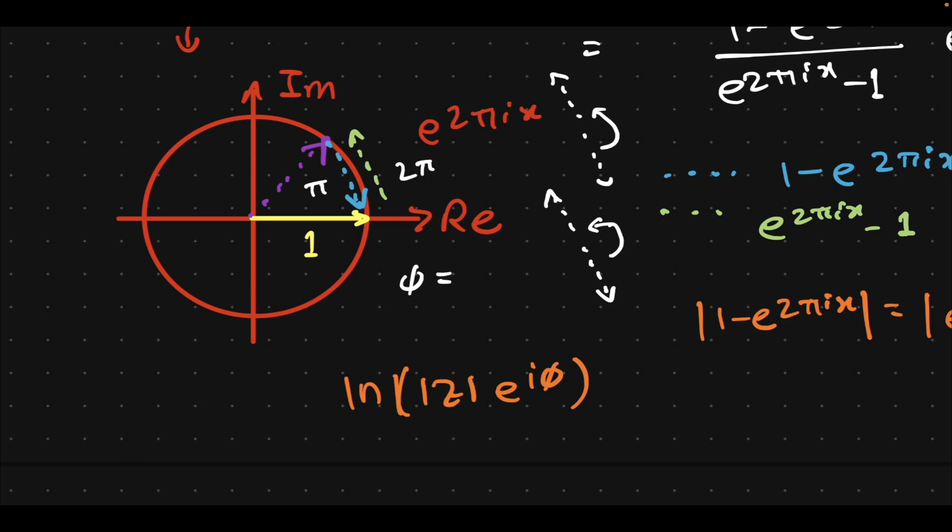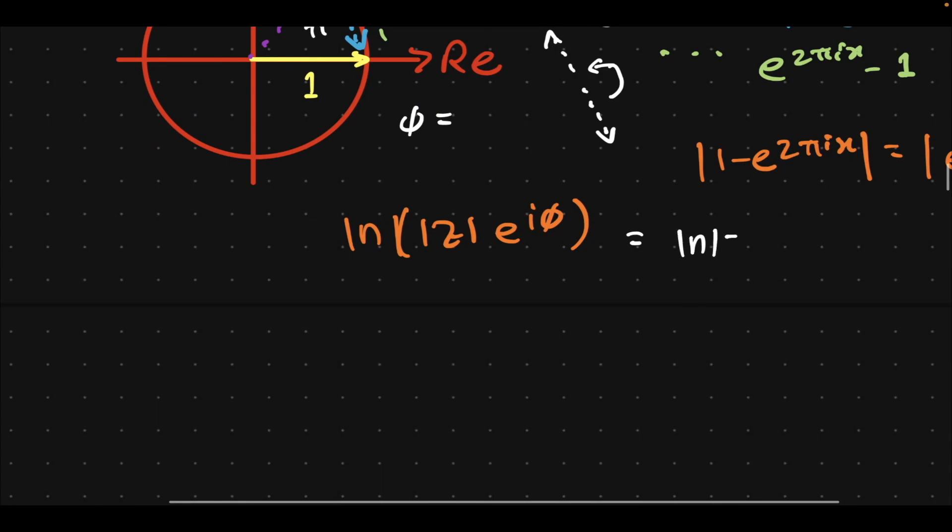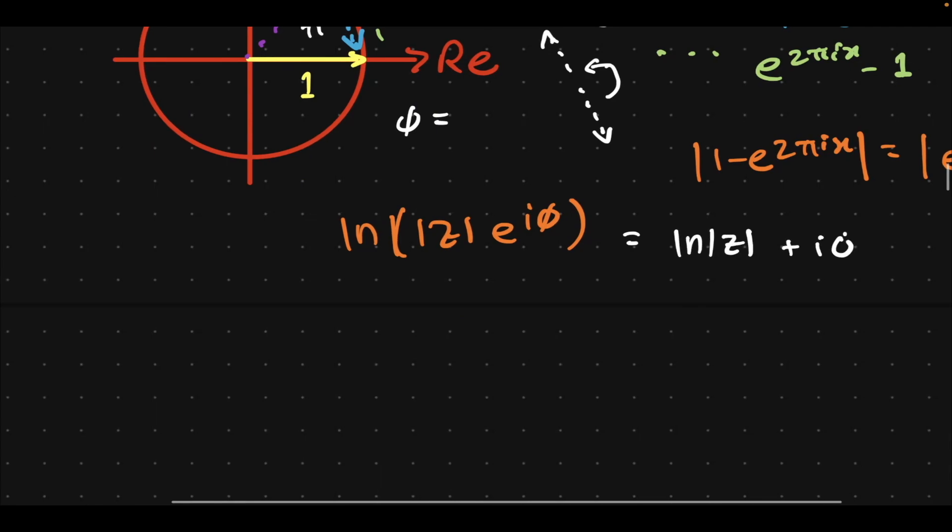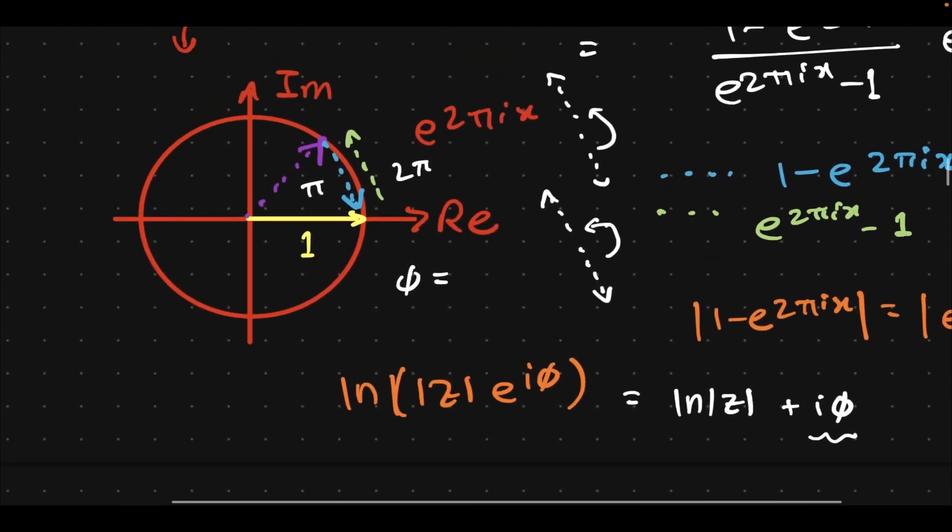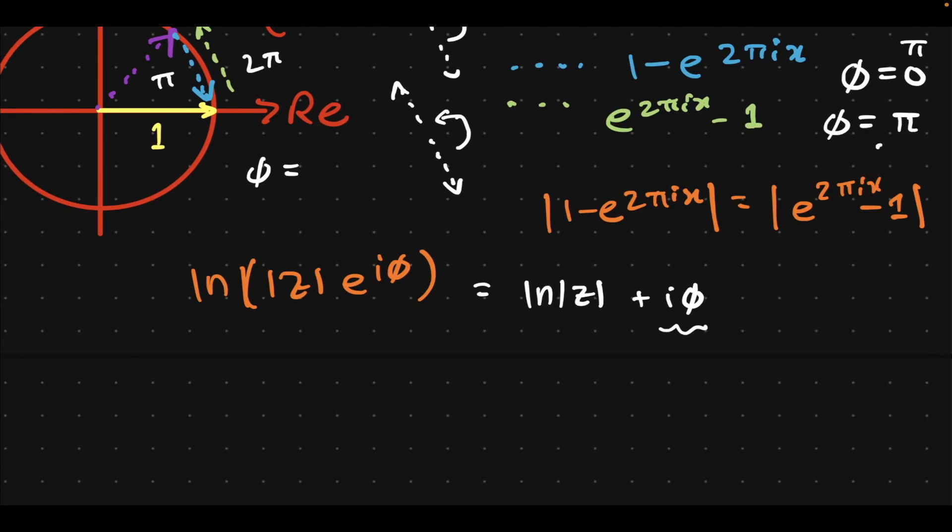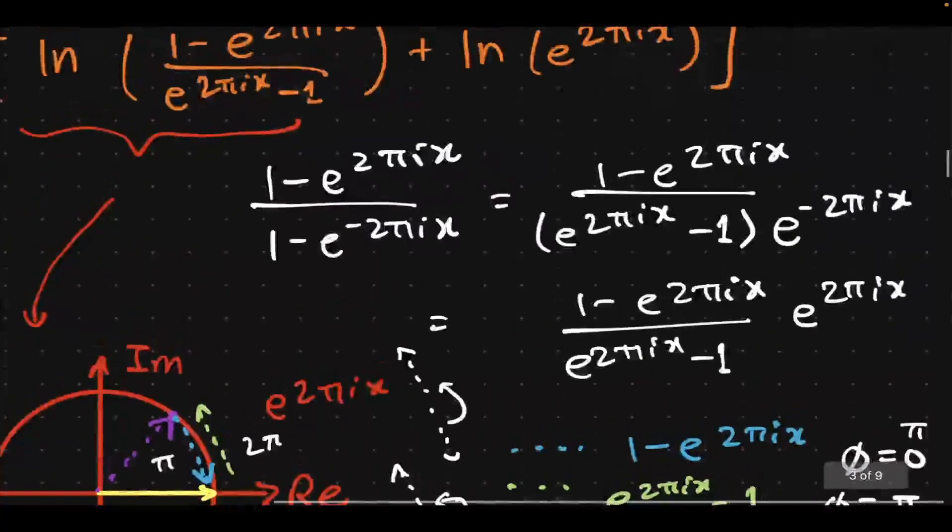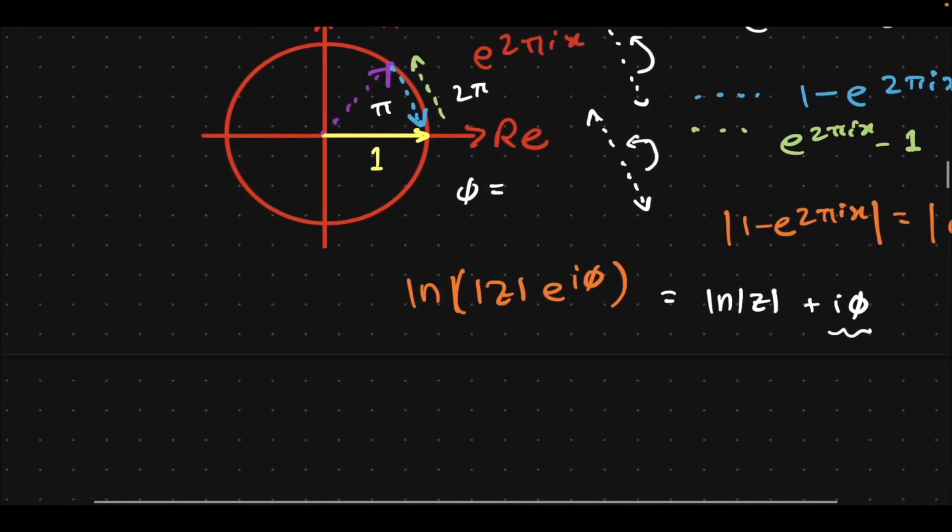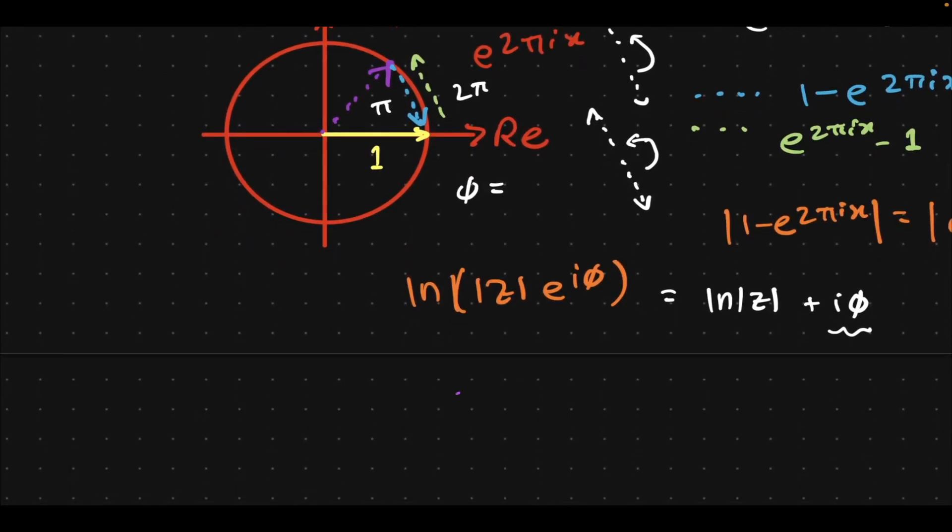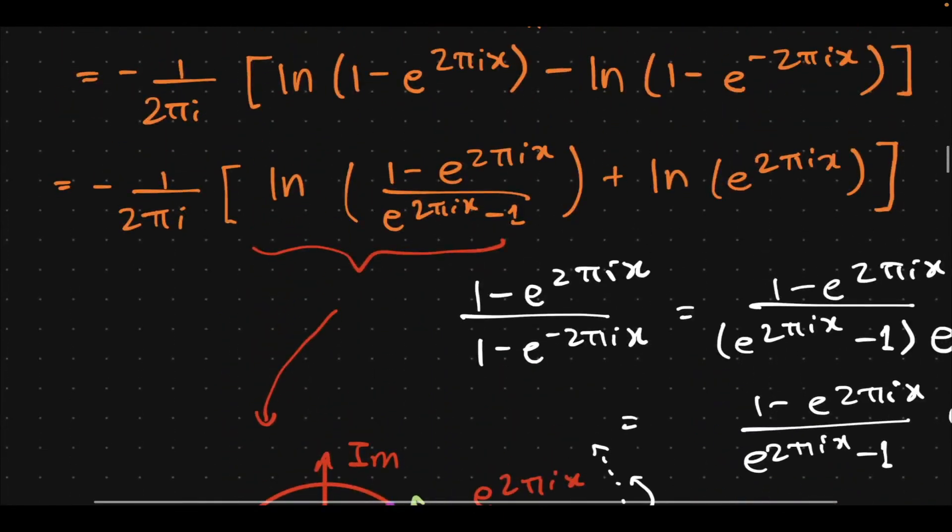And why is 2π not zero? Because if you remember the video on multivalued complex functions, natural log is an infinitely valued complex function because any complex number will then become natural log of magnitude plus i times the phase factor. So 0 and 2π differ by this i times the phase factor. So don't write 2π as 0, otherwise you will get the wrong answer.